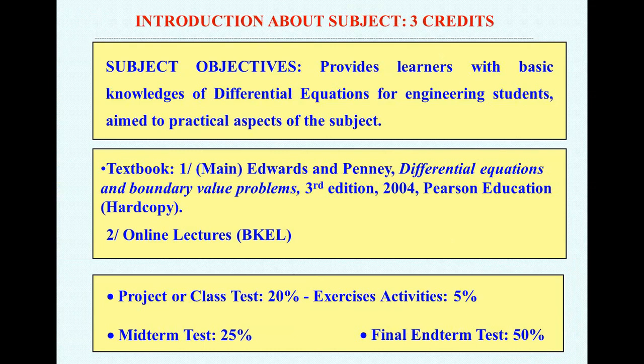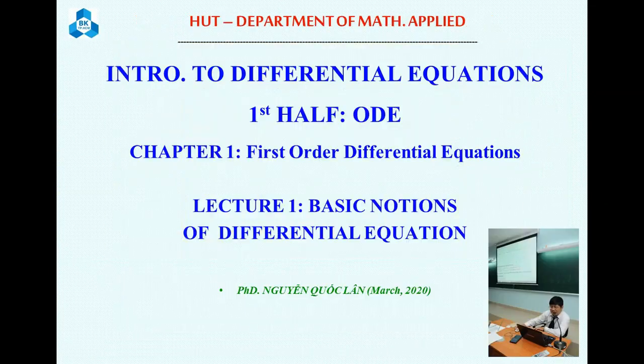The final score will consist of three columns: the project or class test 20% with exercises typically 5%, the midterm test 25%, and the final test 50%.